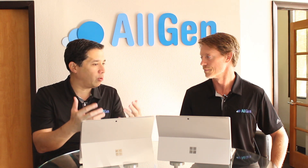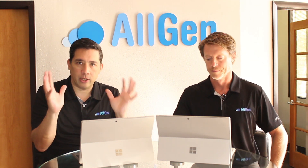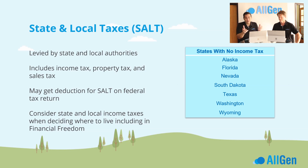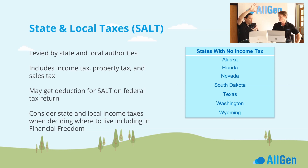Another tax to talk about is state and local — known as SALT. It's done on a state-by-state basis and includes income tax, property tax, and sales tax. People don't realize that when you buy property, there's usually real estate tax associated with that. Not all states have a state income tax. You can see on the picture the states with no income tax currently — which is why some people, like athletes, move to those states to save on taxes.